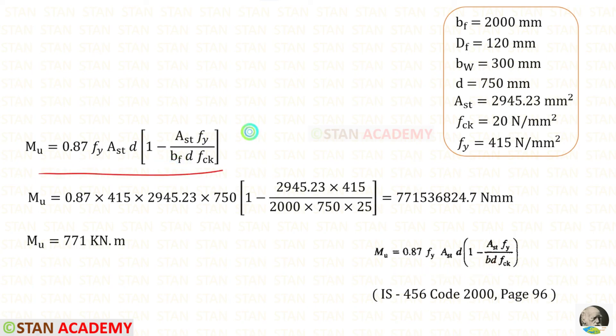Using the equation we can find the moment of resistance. We will get the answer in Newton millimeter. We can divide this by 10 power 6 so that we will get in kilonewton meter.